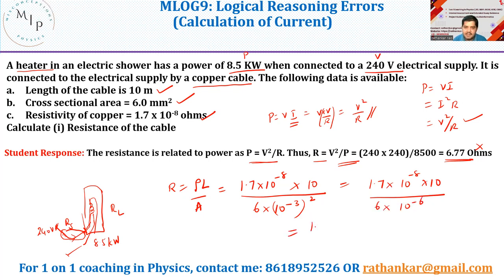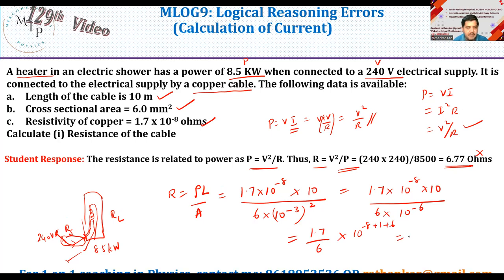If I solve this, what do I get? I get this is 1.7 divided by 6 multiplied by 10⁻⁸ plus 1 plus 6. Hey, where is my calculator? I need to have my calculator. Just a moment. Let me find out what could be the value. 1.7 divided by 6 will be 0.283.